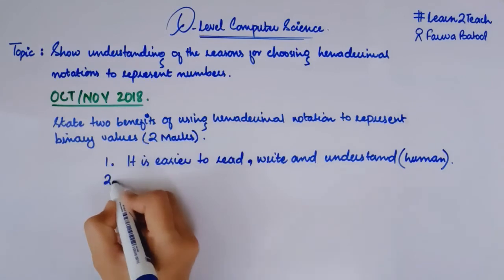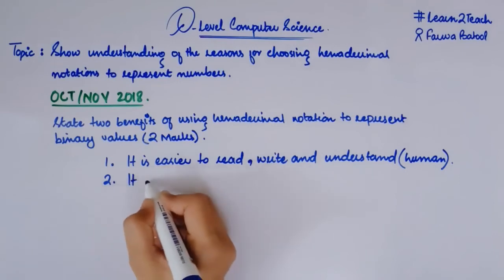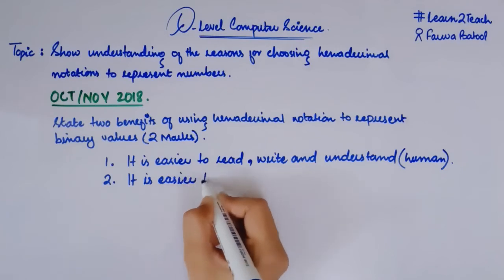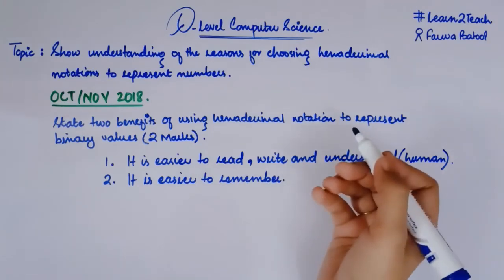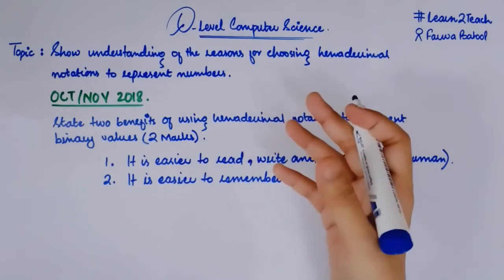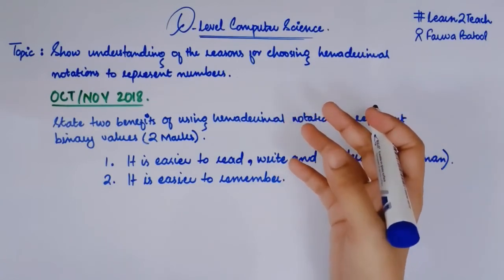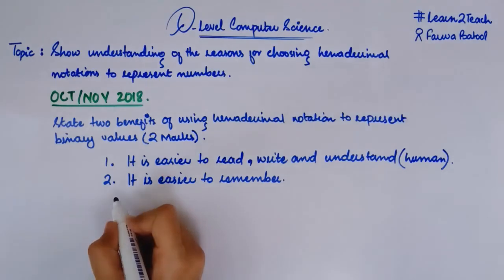For point number 2: it is easier to memorize — easy to remember. It is easy or easier to remember because we cannot remember a large-bit binary number like a 32-bit or 16-bit number. Rather, we can memorize the hexadecimal equivalent of that binary number because it is lesser in terms of digits. So it is easy to remember.